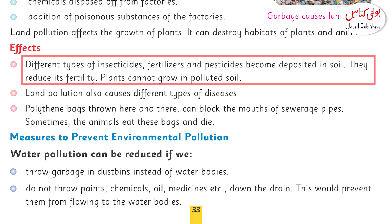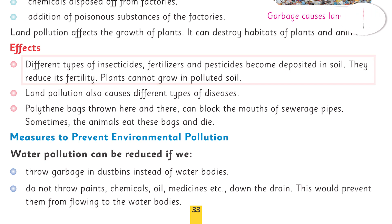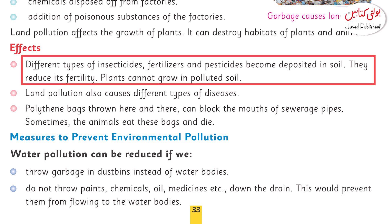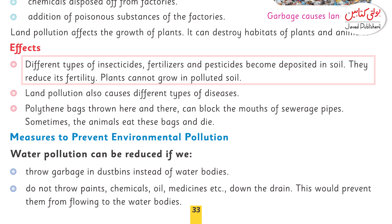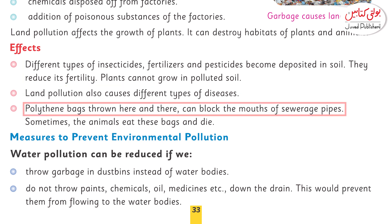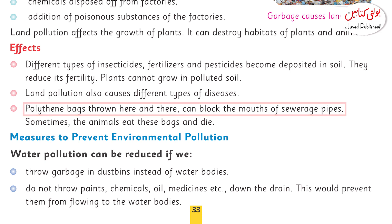Plants cannot grow in polluted soil. If plants don't grow, where do we get our food? Life will be disturbed. Land pollution also causes different types of diseases. Polythene bags thrown here and there can block the mouth of sewerage pipes.